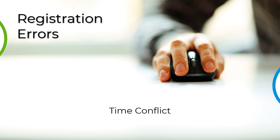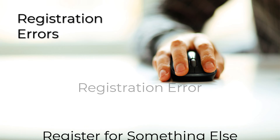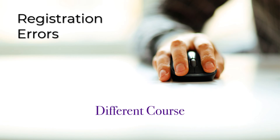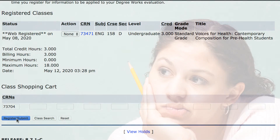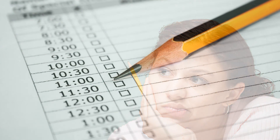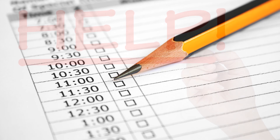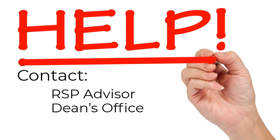Time conflict will appear if two or more of your desired courses overlap in time. If you get a registration error, the best thing to do is to register for something else, like an open section of the same course or a completely different course. To correct a registration error, enter a different CRN in your shopping cart and click Register Submit. Please be sure to prepare a list of alternate courses and their CRNs in advance. You may have to rearrange your schedule to get a set of courses that works for you based on what is available at the time you register. For help with registration errors, please contact your RSP advisor, the Dean's office, or the Registrar's office.